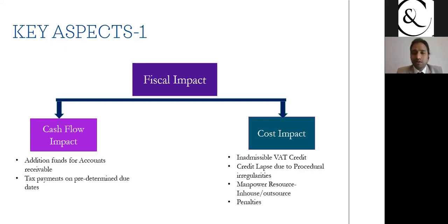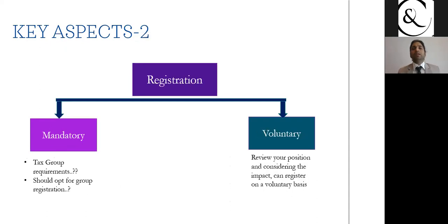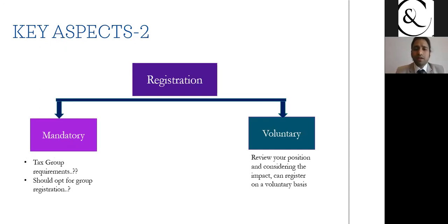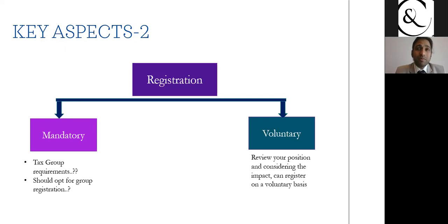The second aspect is registration. Registration is primarily of two types — mandatory or voluntary. If mandatory, based on a specific threshold of one million Omani rials for the first tax phase, you must register on a mandatory basis.